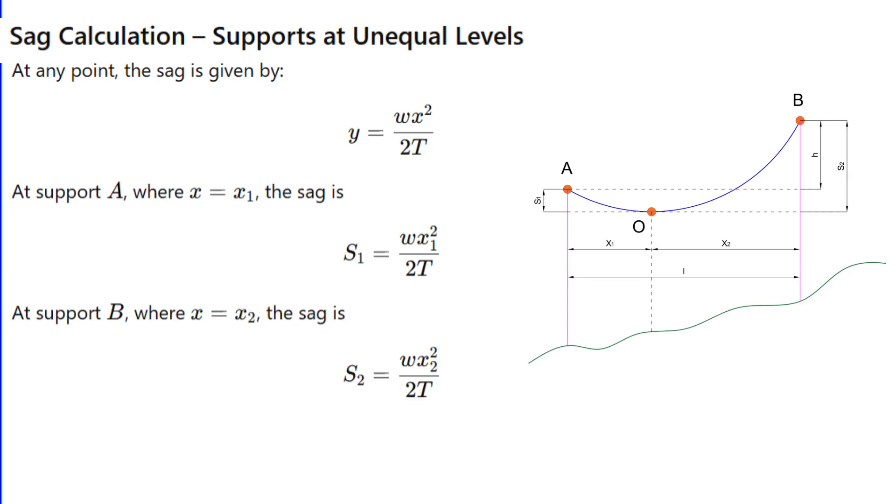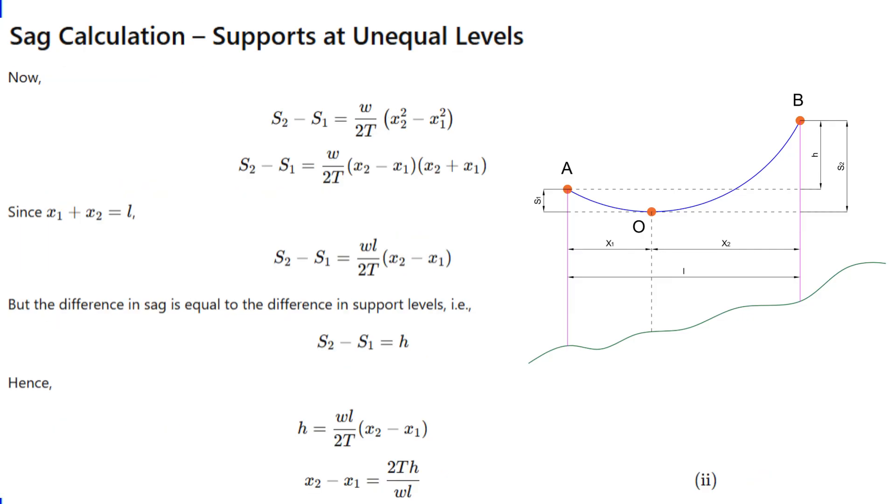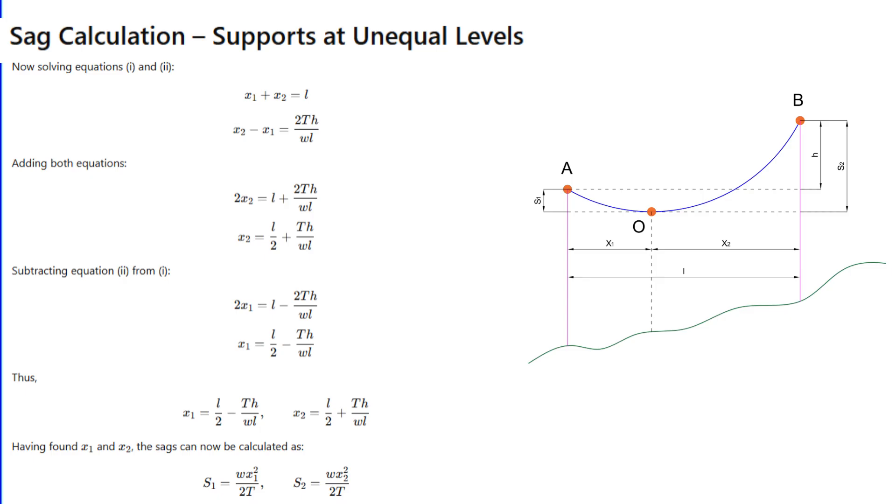Then the sag at lower support s₁ equals wx₁²/2T and the sag at higher support s₂ equals wx₂²/2T. Also, x₁ + x₂ = l and h = (wl/2T)(x₂ - x₁). From here, x₁ and x₂ can be calculated as l/2 - Th/wl and l/2 + Th/wl.